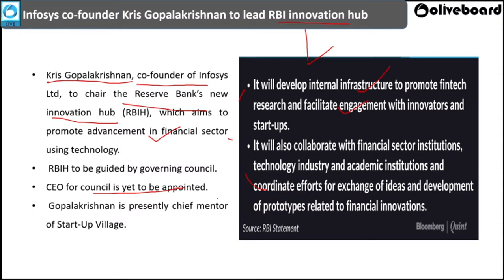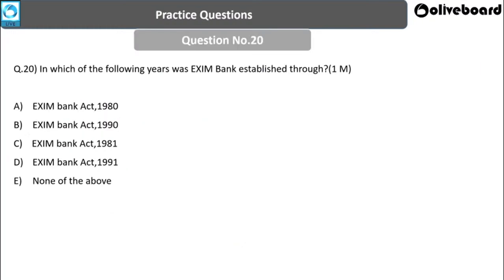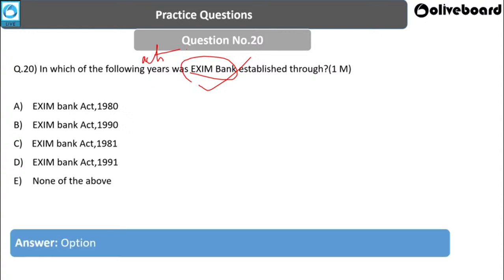Next question: Through which Act was EXIM Bank established? Options: EXIM Bank Act of 1980, 1990, 1981, or 1991. The answer is the EXIM Bank Act of 1981. EXIM Bank is a statutory body — established through an Act of Parliament, the EXIM Bank Act of 1981 — and is a wholly owned subsidiary of the Government of India.